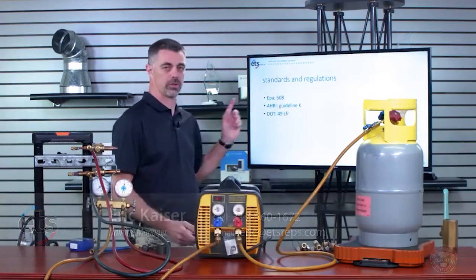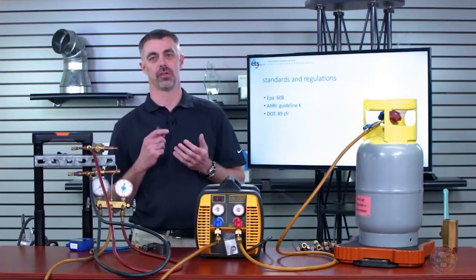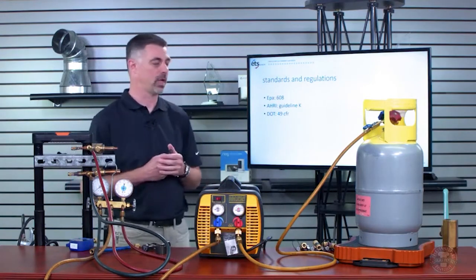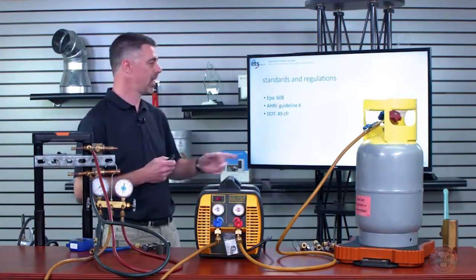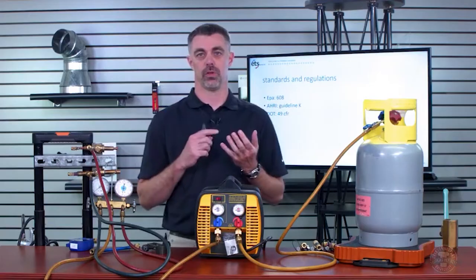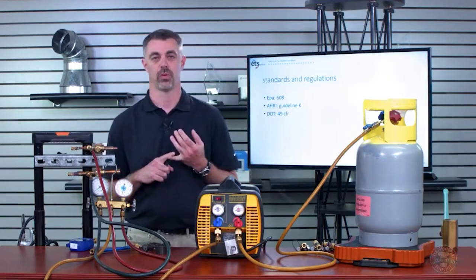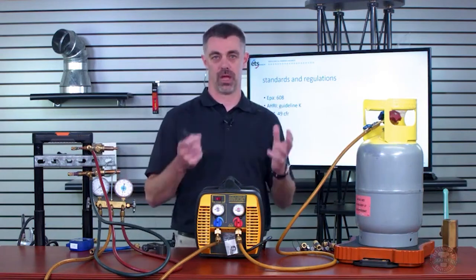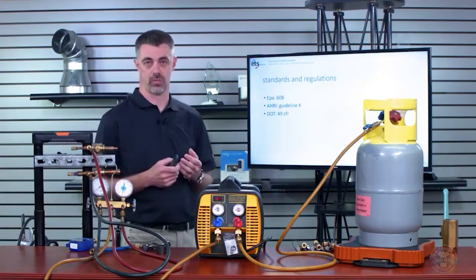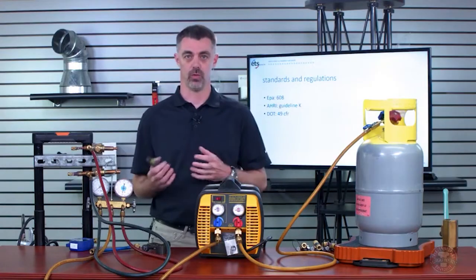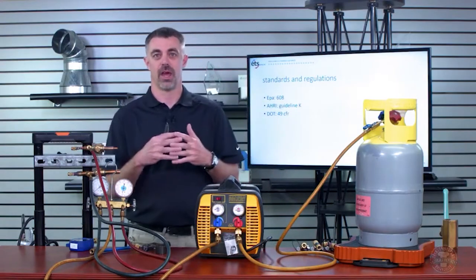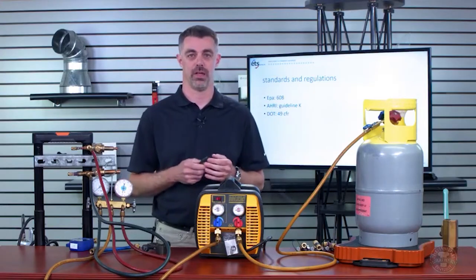With refrigerant recovery, technicians deal with standards and regulations from three places: the EPA with Section 608, AHRI Guideline K, and the DOT's 49 CFR. The DOT rules are specific to transportation — when we put tanks in our trucks and drive them down the road. The EPA governs when we need to recover and how much we can lose during recovery. We need to figure out how all three intermesh and where to apply each.